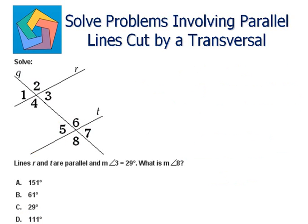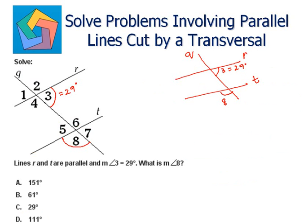Next problem. Solve. Lines are parallel and the measure of angle 3 is equal to 29 degrees. What is the measure of angle 8? This is angle 8. Let's draw the figure again — r, t, transversal. This is angle 3 equals 29 degrees, and this is angle 8. Now you can see in the figure that angle 3 and angle 5 are alternate interior angles. Both are lying inside the parallel lines and on the opposite side of the transversal. So the measure of angle 3 is equal to the measure of angle 5. Alternate interior angles are congruent.